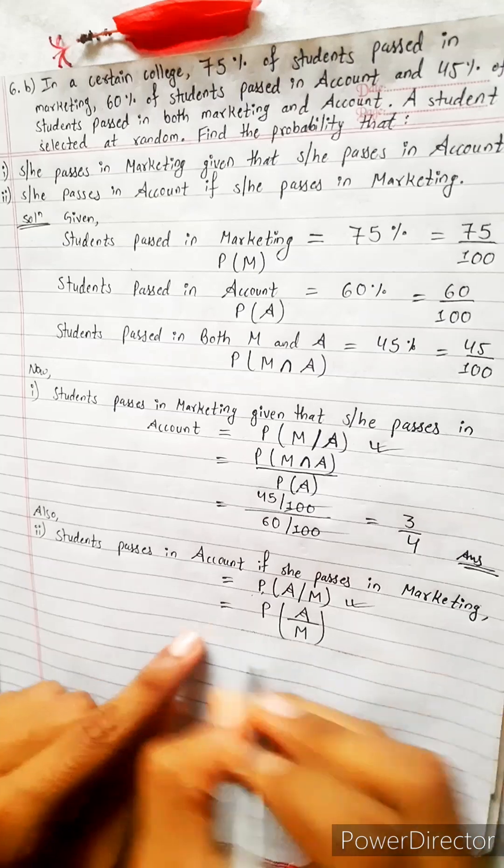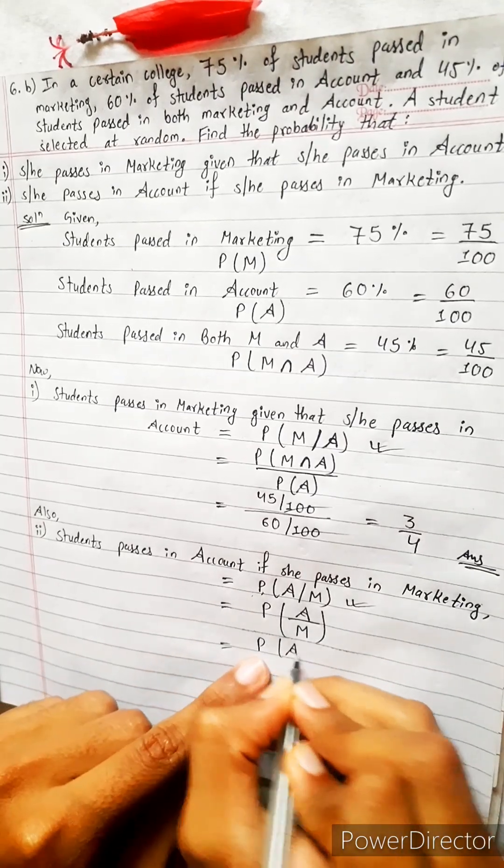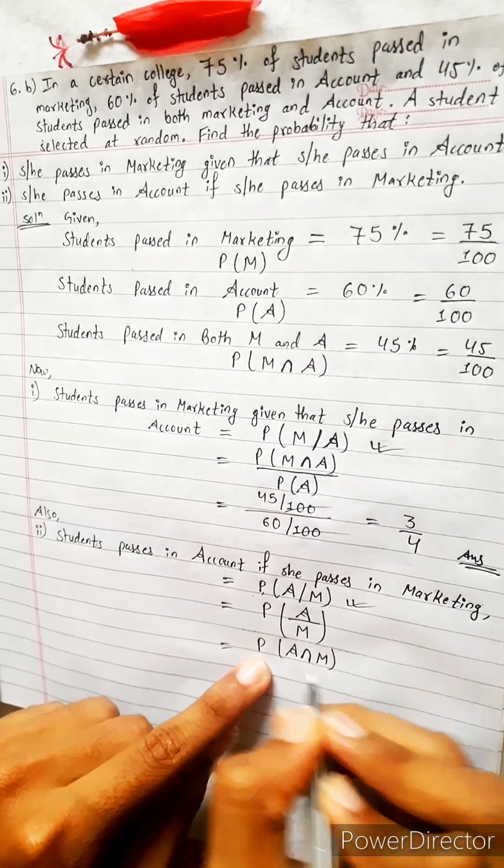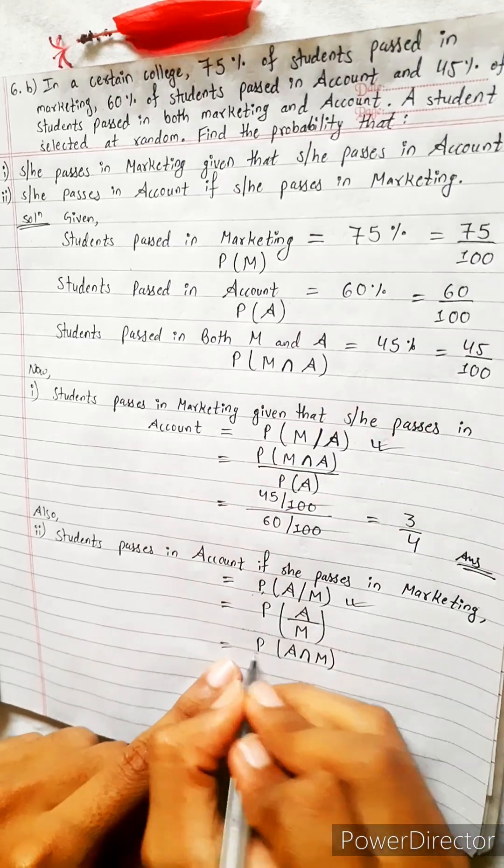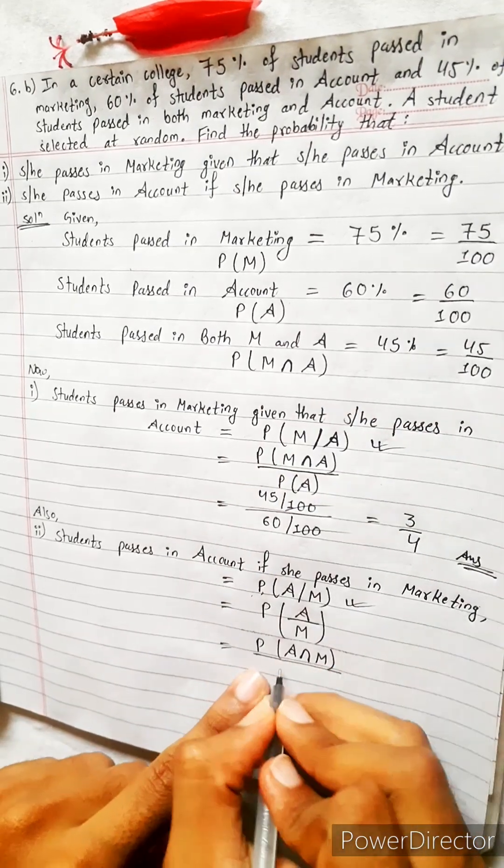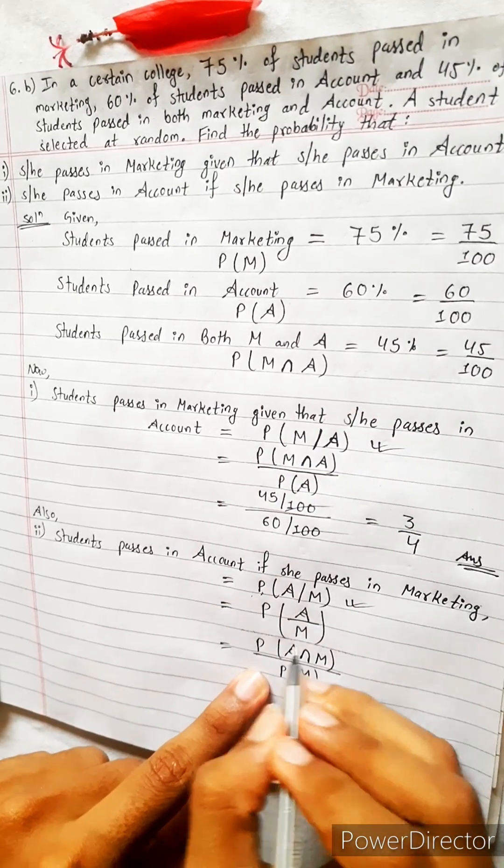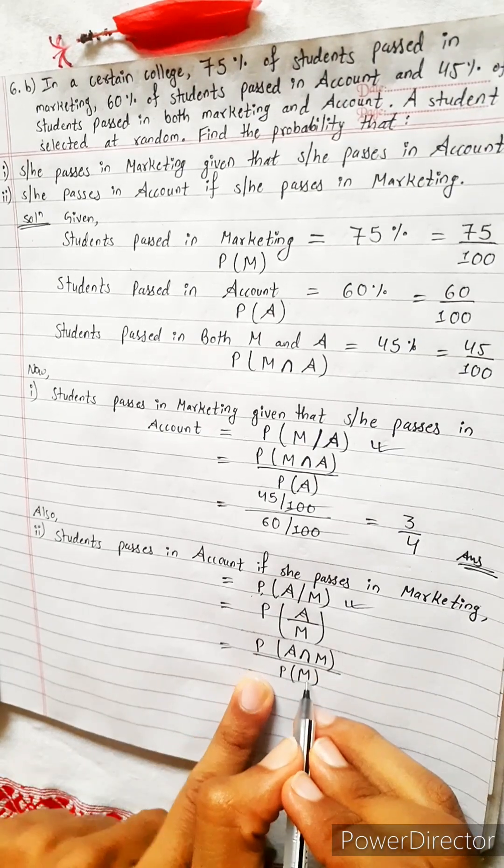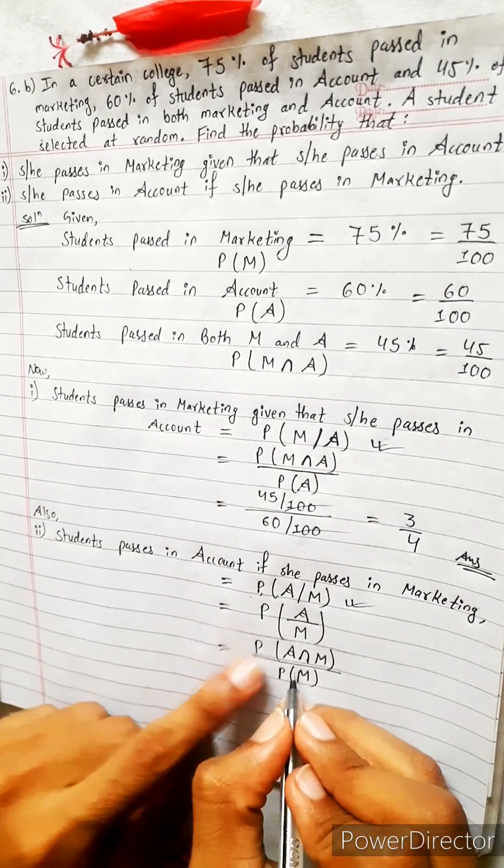And look, its formula is A intersection M, or let's say M intersection A, same thing, divide by - look at division M. So PM in the denominator. There is M, here also in denominator there is M. So same, same.